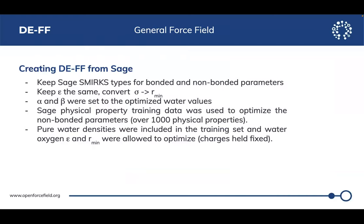We then thought: can we create a general transferable double exponential model? Our plan was to transition SAGE into a general model with a double exponential functional form. We kept the SAGE SMIRKS types, kept epsilon exactly the same, converted sigma to r_min, and kept alpha and beta from our optimized water model as global parameters. We then fit to the SAGE physical property training data — about a thousand physical properties — and also co-optimized water, including pure water densities over a range of temperatures to regularize the water model.